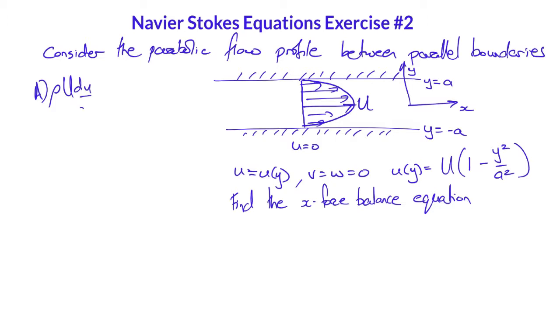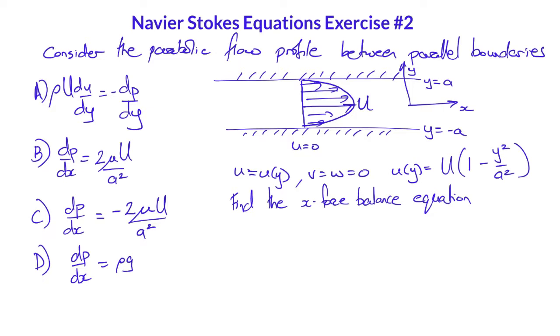Did you get rho capital U du dy equals minus dp dy, or dp dx equals 2 mu capital U over a squared, or dp dx equals minus 2 mu capital U over a squared, or dp dx equals rho g, or dp dx equals minus 2 mu capital U y over a squared.